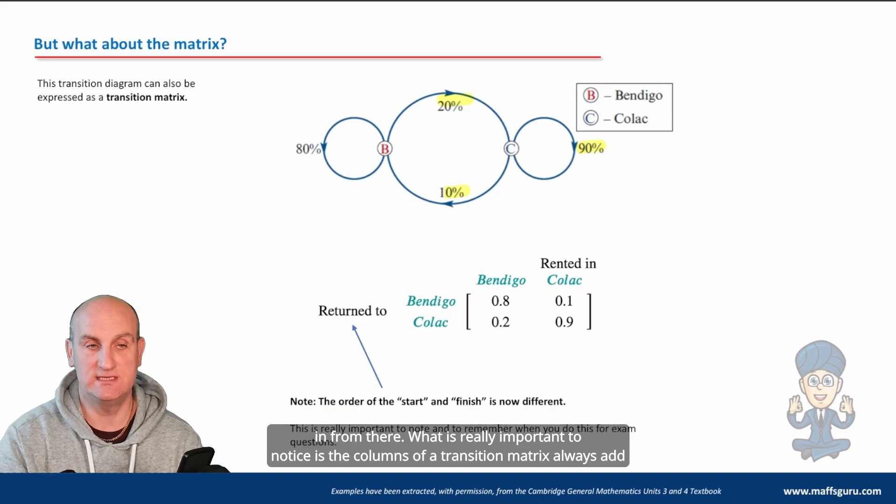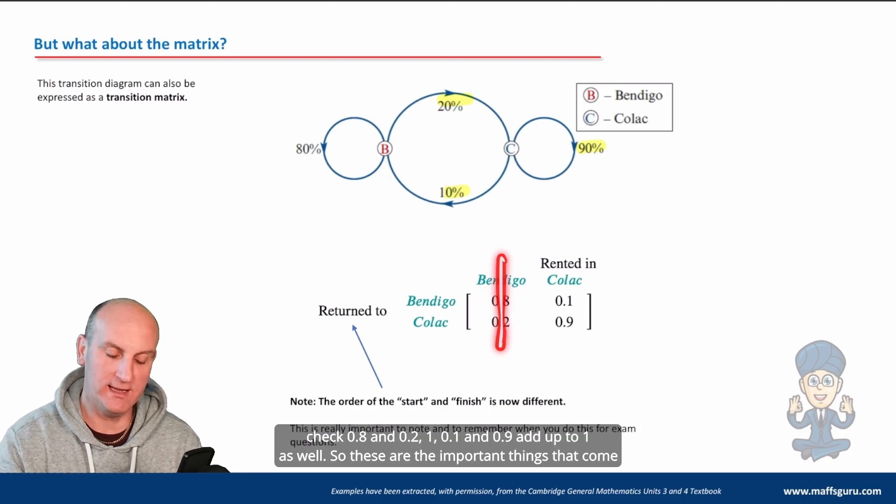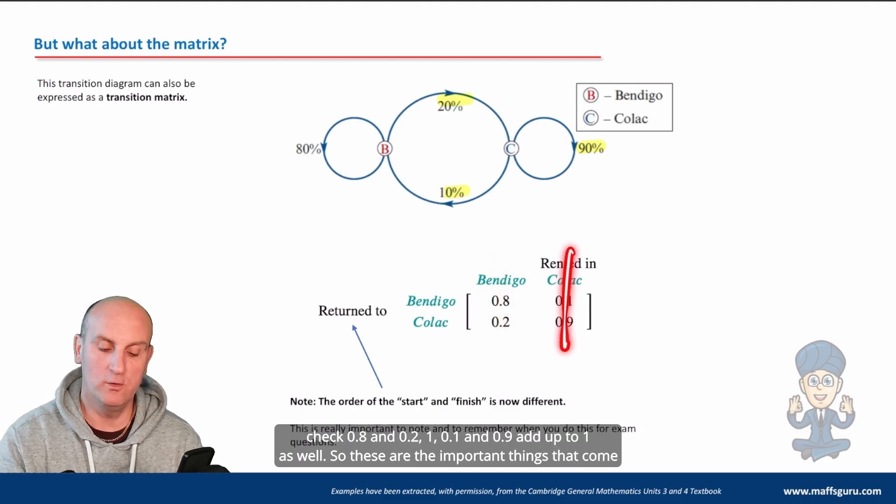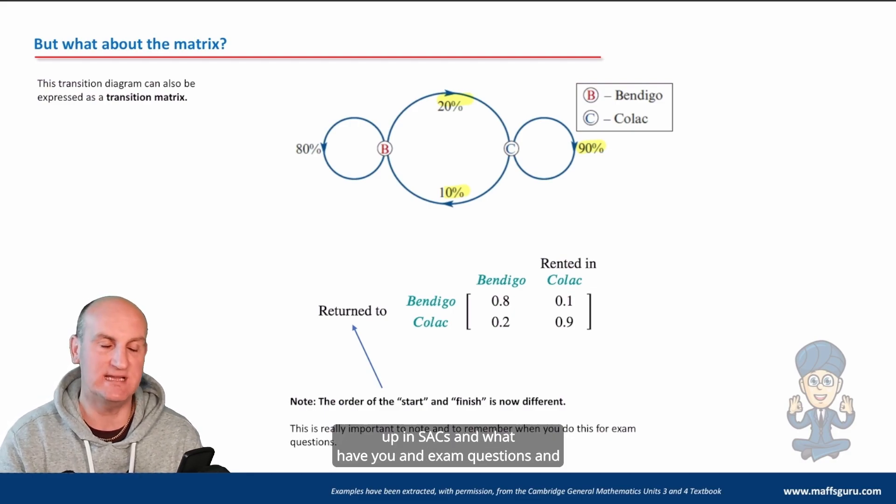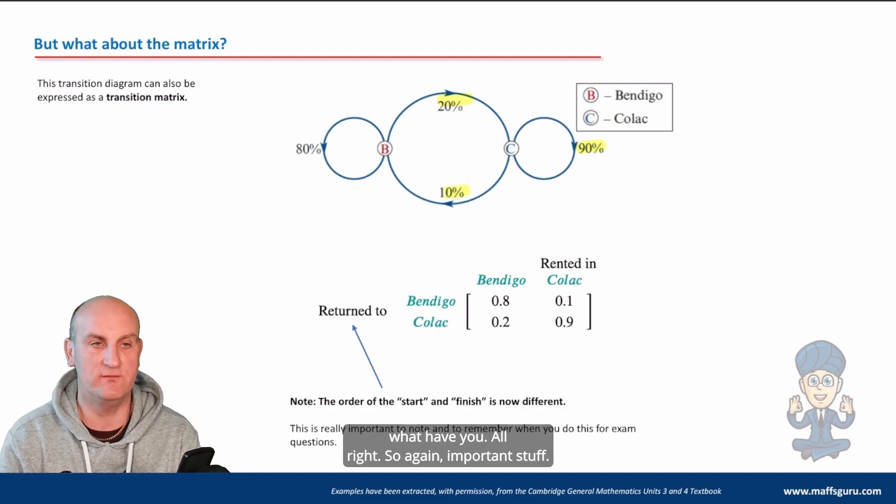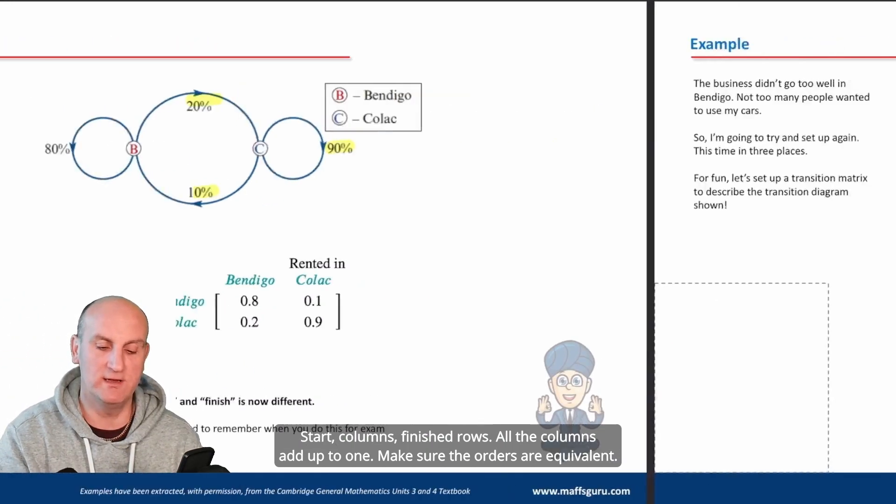What is really important to notice is the columns of a transition matrix always add to one. And if they don't, you've made a mistake. You've got things in the wrong way. So let's just check. 0.8 and 0.2, 1. 0.1 and 0.9 add up to one as well. So these are the important things that come up in SACs and exams. All right? So again, important stuff. Start, columns, finished, rows. All the columns add up to one. Make sure the orders are equivalent.